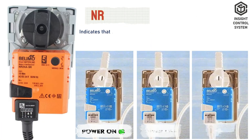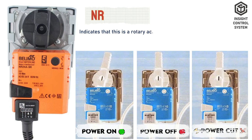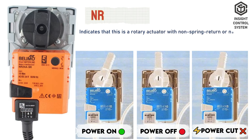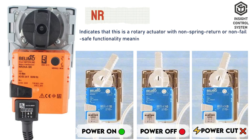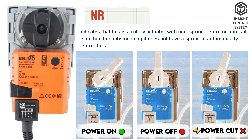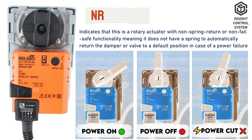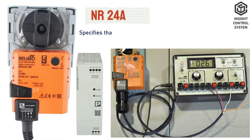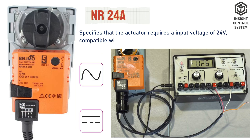NR indicates that this is a rotary actuator with non-spring return, or non-failsafe functionality, meaning it does not have a spring to automatically return the damper or valve to a default position in case of a power failure. 24A specifies that the actuator requires an input voltage of 24V, compatible with both AC and DC power sources.